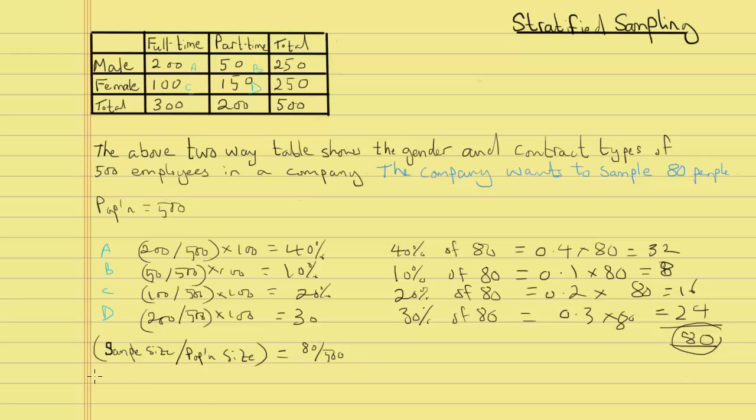What we do next is for each group multiply this ratio. So 80 over 500 multiplied by 200, which gives us 32. For group B we do 80 divided by 500 multiplied by 50 and we get 8.